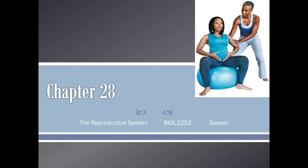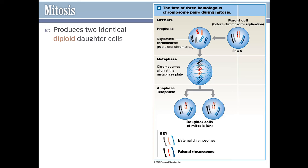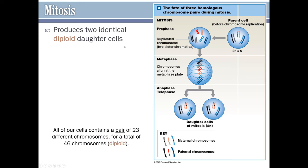This is Chapter 28, The Reproductive System. We're going to start with a review of mitosis and meiosis, which are the two types of cell division. Most of your body cells undergo mitosis, and during mitosis the cell produces an identical copy of itself. At the end of mitosis, you have two identical diploid daughter cells. Diploid means that you have two of each type of chromosome. All of our cells contain a pair of 23 different chromosomes for a total of 46 chromosomes, making the majority of the cells in our body diploid.